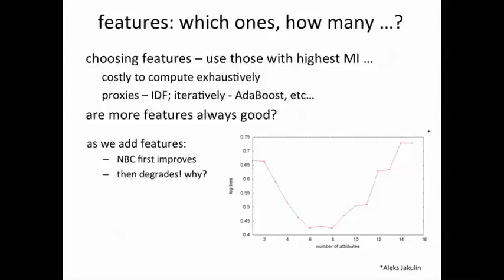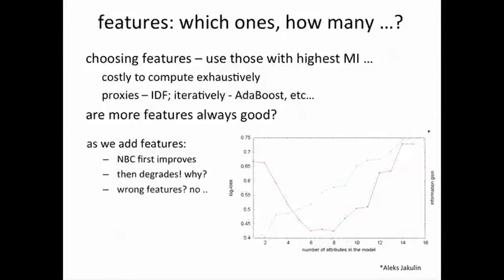Perhaps we are using the wrong features to start with. It turns out that that's not the whole story either. In this example, the features with the lowest mutual information or information gain — which is another term for the same idea — are used first, and then the good features come later. Still the classifier goes haywire.